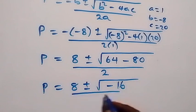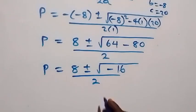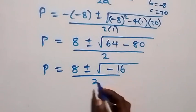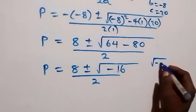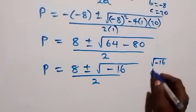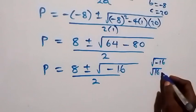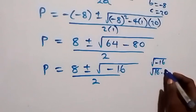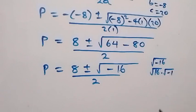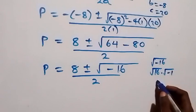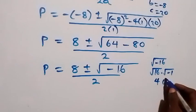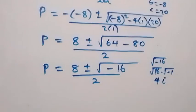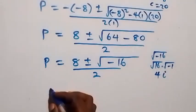We can separate the square root of negative 16 as the square root of 16 times the square root of negative 1. The square root of 16 is 4, and the square root of negative 1 is i, so the square root of negative 16 gives us 4i.